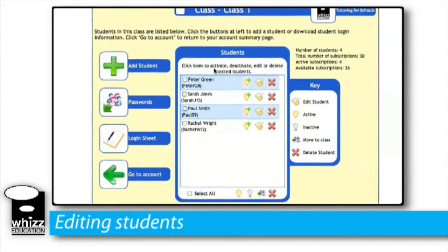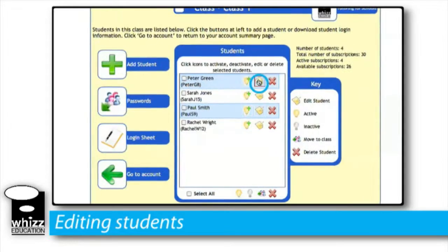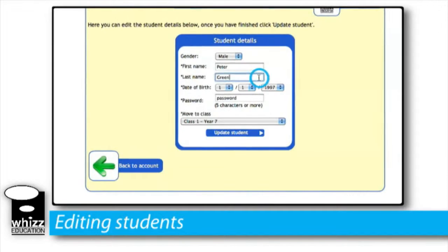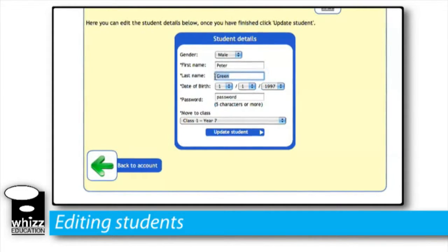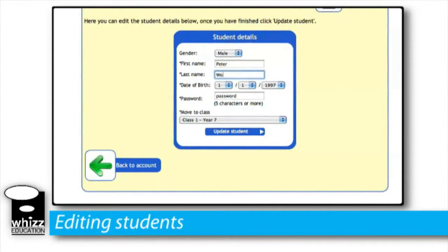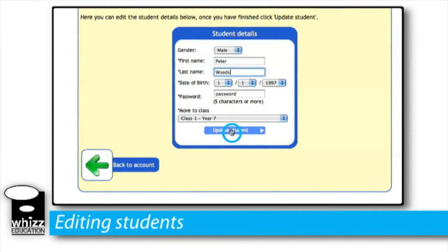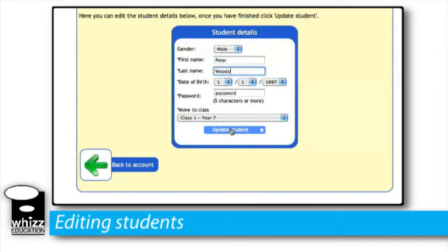To edit a student I click on this icon next to the student's name and this takes me to the student's details allowing me to edit any of the information here. When I've finished editing the student I click update student here to save my changes.